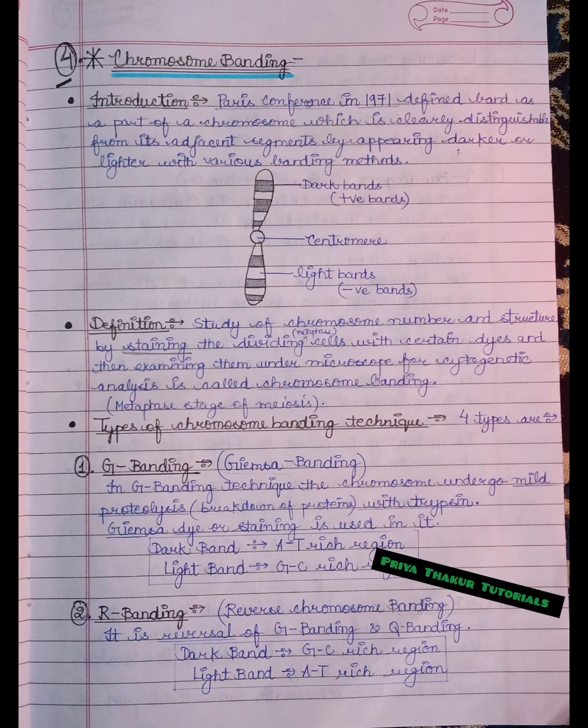The dark bands are the positive bands while the light bands are the negative bands. Let us talk about the definition of chromosome banding.